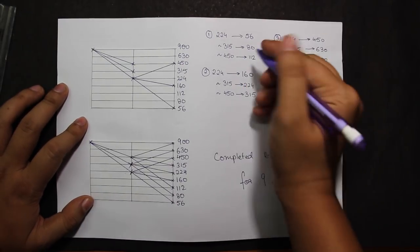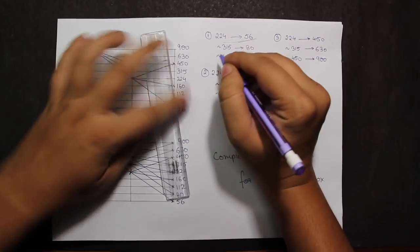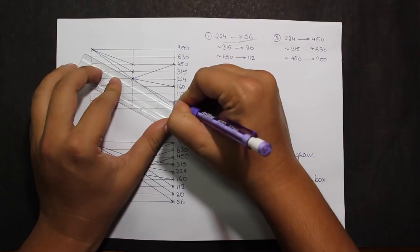Taking the base as 224 to 56, I'll be joining 315 to 80 and 450 to 112.